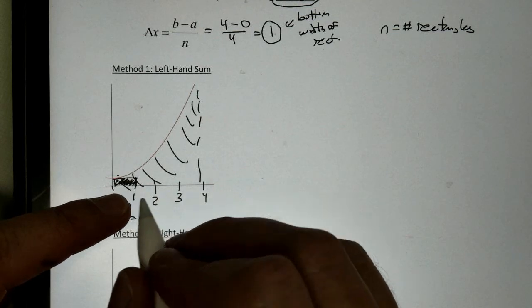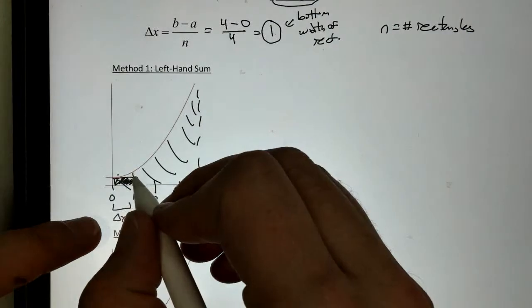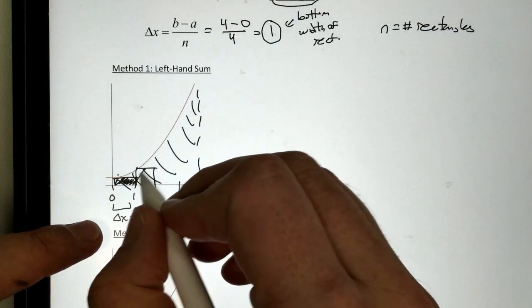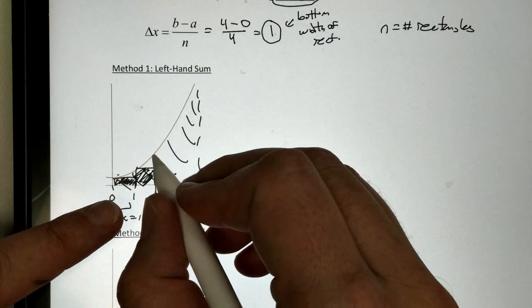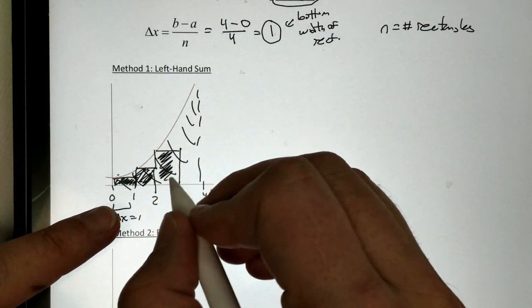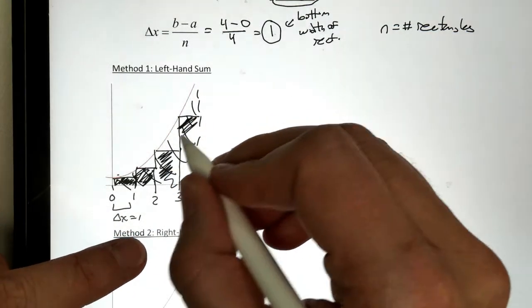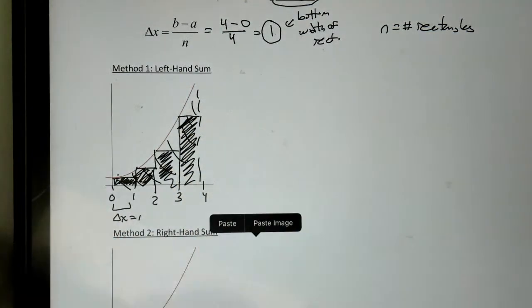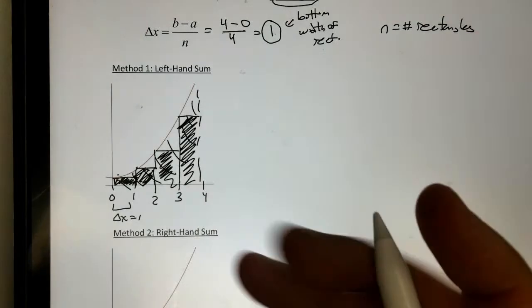And, the next one says, my next rectangle goes between 1 and 2. So, 1 is on the left. There's my rectangle. Then, between 2 and 3, 2 is on the left. And, then, between 3 and 4, 3 is on the left.